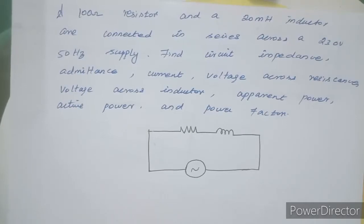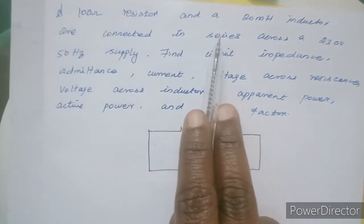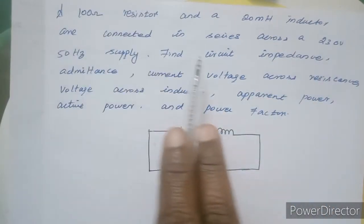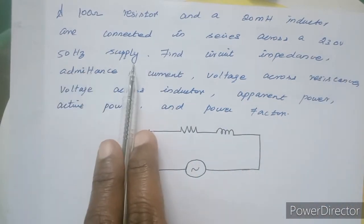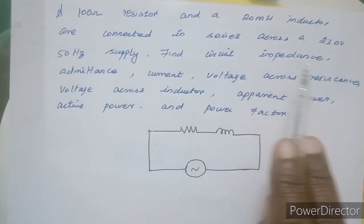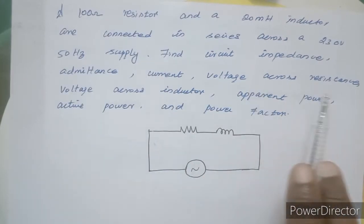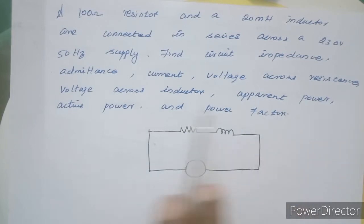Hi students, in the case of an RL series circuit: a 100 ohm resistor and a 20mH inductor are connected in series across a 230V 50Hz supply. Find the circuit impedance, admittance, current, voltage across the resistance, voltage across the inductor, apparent power, active power, and power factor.